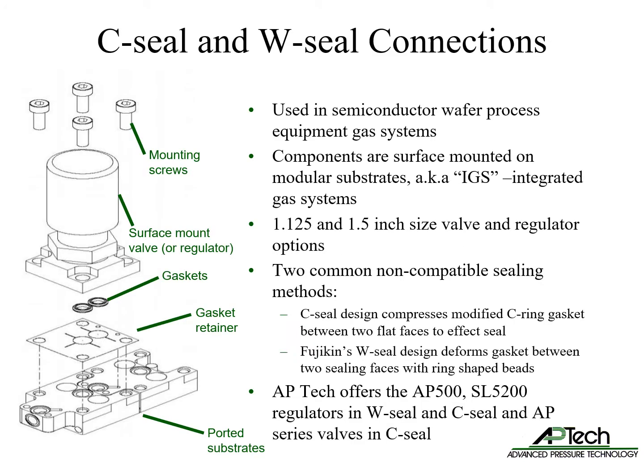Semiconductor wafer process equipment commonly uses surface mount components mounted on modular substrates. These systems are also known as IGS systems or integrated gas systems. There are two size standards: 1/8 inch and 1/2 inch. There are two common non-compatible sealing methods for surface mount components to attach to the substrates. The C-seal design uses a modified outward-facing C-ring shaped gasket between two flat sealing faces. Fujikin's W-seal design seals by deforming a gasket between two sealing faces with ring-shaped beads.